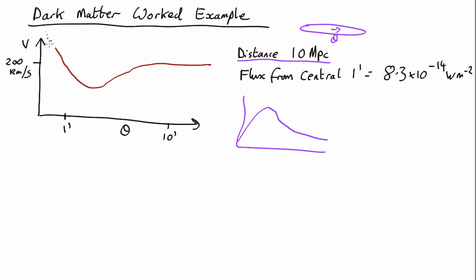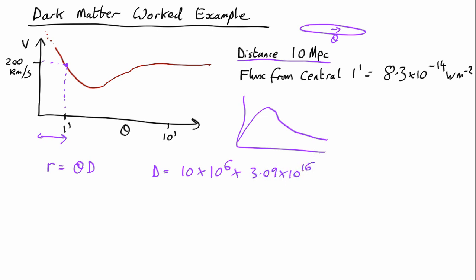Let's try and work out how much mass there is in the middle. Let's pick a radius of 1 arcminute, where the velocity is about 200 km per second. The first thing to do is to work out what physical distance 1 arcminute refers to. We know that the physical distance equals the angle in radians times the distance. The distance is 10 megaparsecs, which is 10 times a million times 3.09 times 10 to the 16 meters, which comes out as 3.09 times 10 to the 23 meters.